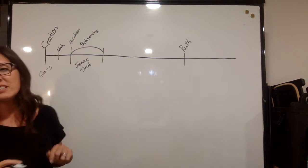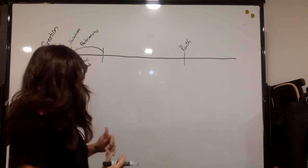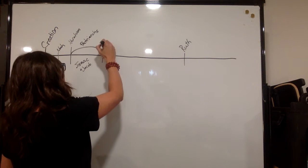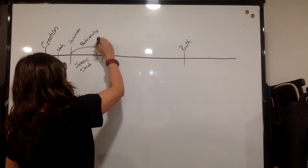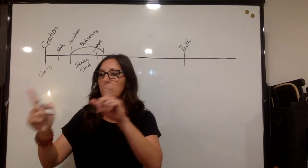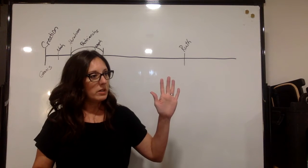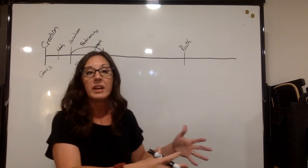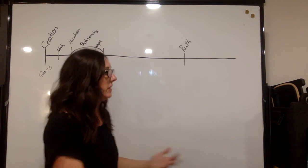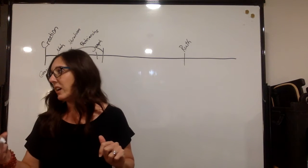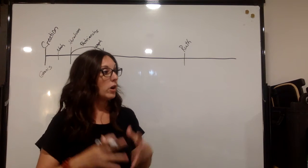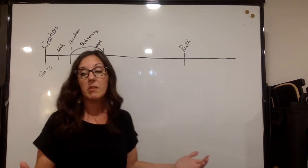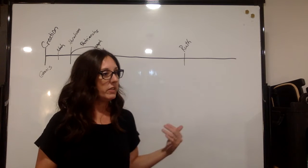From Abraham to the end of Genesis we have the patriarchs — Abraham, Isaac, and Jacob. At the very end of Genesis we have the story of Joseph, which is one of my favorites because it's one of the first times God is clearly telling his people how he's going to redeem them. The story of Joseph is how the Israelites end up in Egypt.